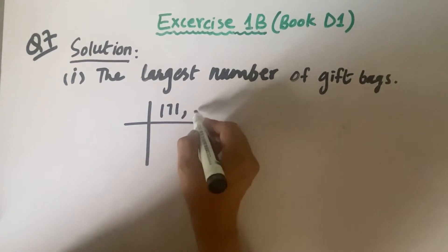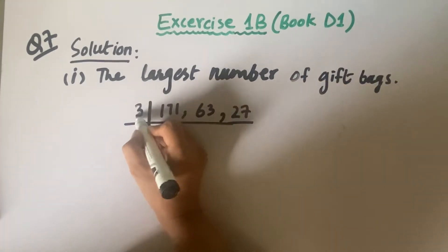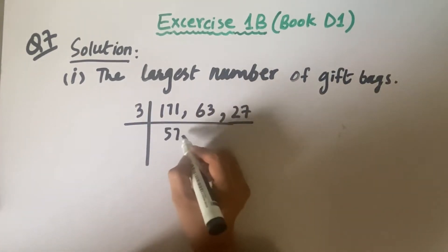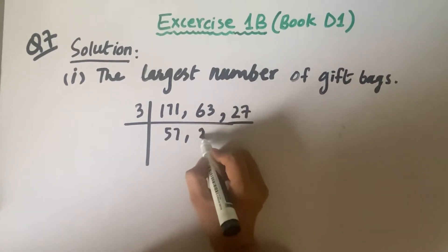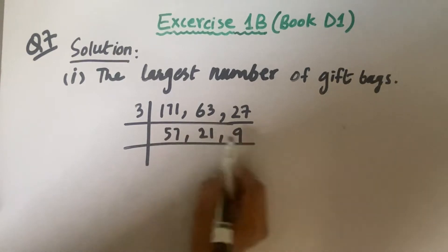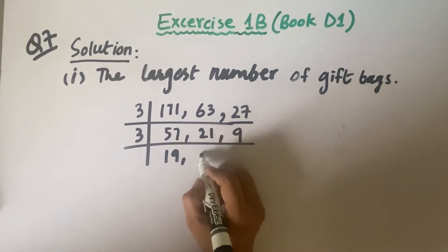That is 171 for pens, 63 for pencils, and 27 for erasers. We will start with 3. 3 times 57 is 171, 3 times 21 is 63, and 3 times 9 is 27. It can be further divided by 3, so 3 times 19 is 57, 3 times 7 is 21, and 3 times 3 is 9.